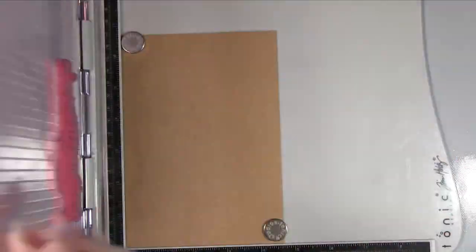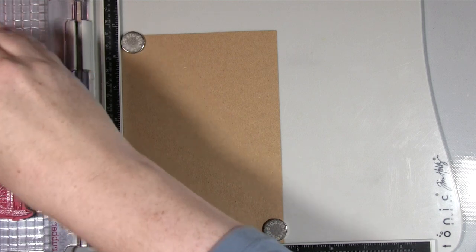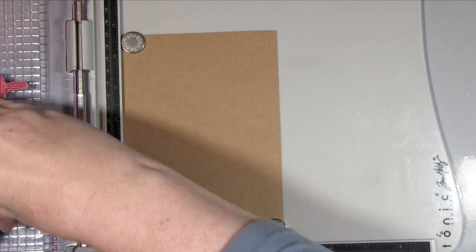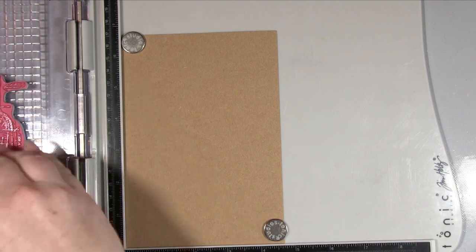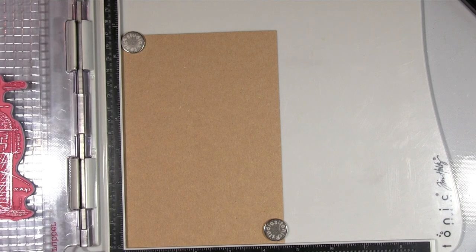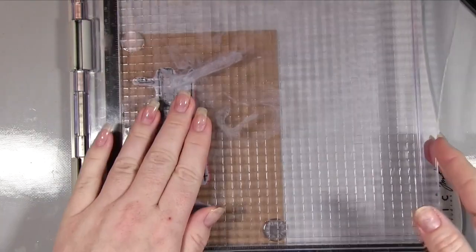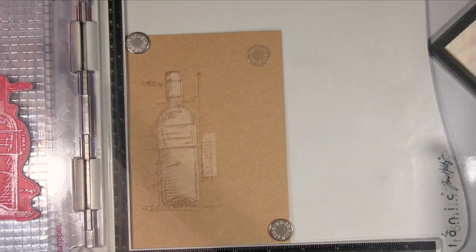Next using my stamp platform I'm stamping out my images. For this I'm using my embossing ink because I just want like a watermarked area. I don't want stamped lines because I'm going to use my pencils to create the lines, so I don't actually want black lines showing through. By using the embossing ink it just creates a watermark effect and it's just a really good way of creating basically a no line drawing.